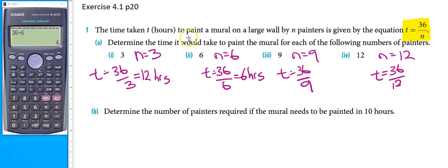In our third case, 36 divided by 9 equals 4 hours.